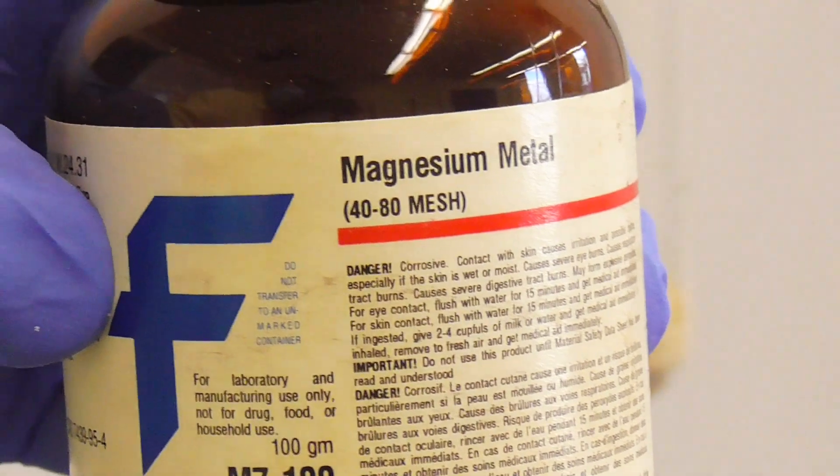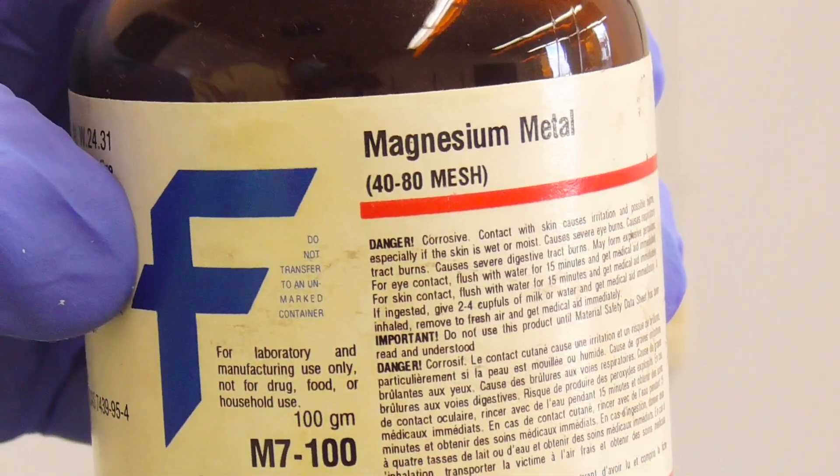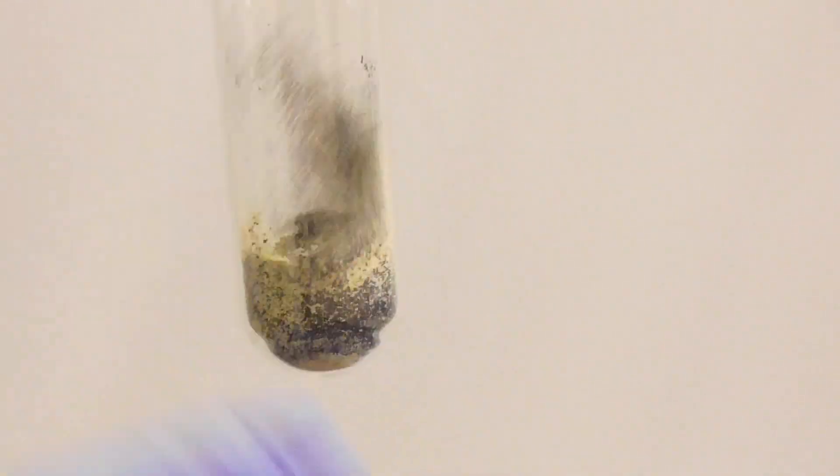I'm going to try to extract the element silicon from sand using magnesium metal. First, I'll add some granular magnesium metal to the sand in this test tube. After shaking the test tube to blend the contents, I'll heat the mixture with a blowtorch.